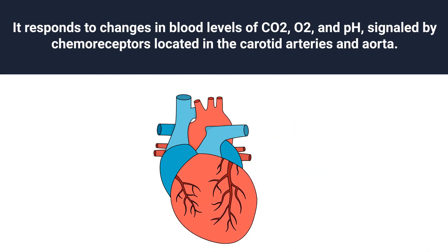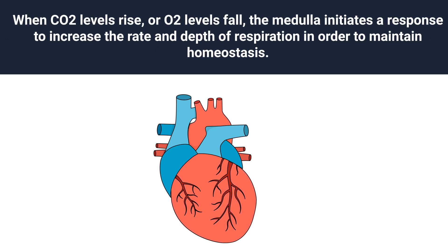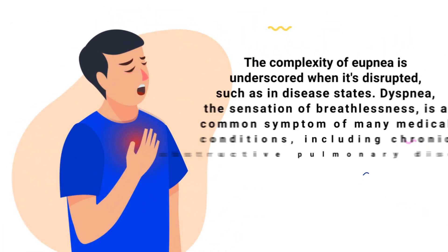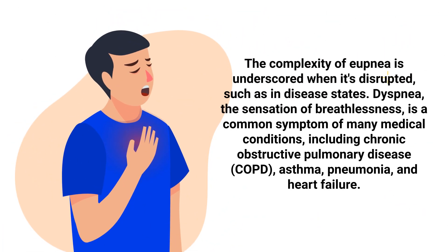These changes are signaled by chemoreceptors located in the carotid arteries and aorta. When CO2 levels rise or oxygen levels fall, the medulla initiates a response to increase the rate and depth of respiration in order to maintain homeostasis. The complexity of eupnea is underscored when it is disrupted, such as in disease states.